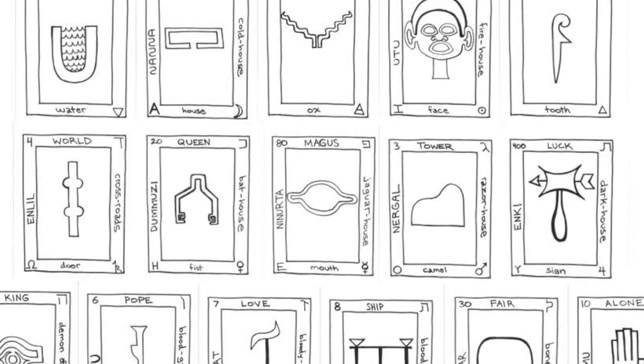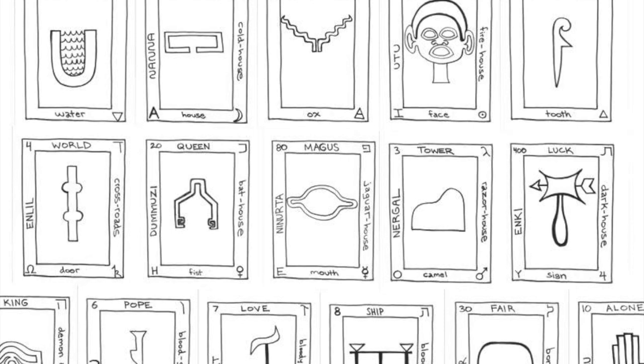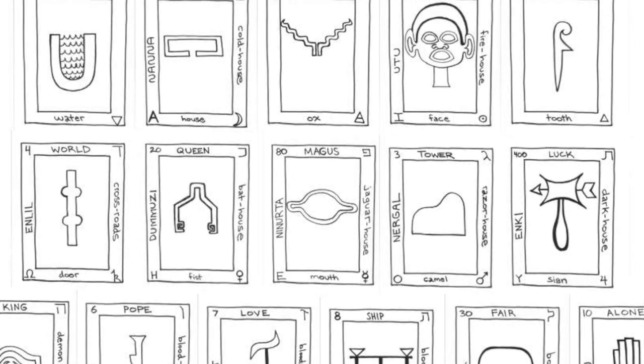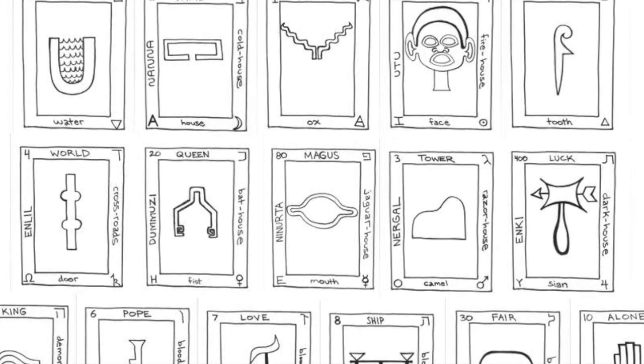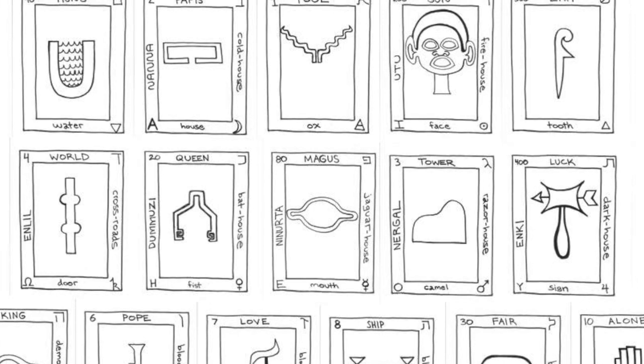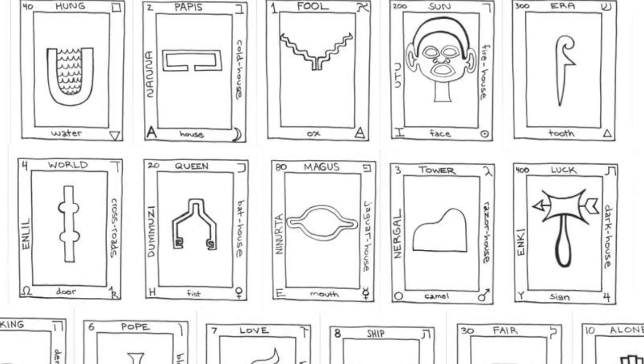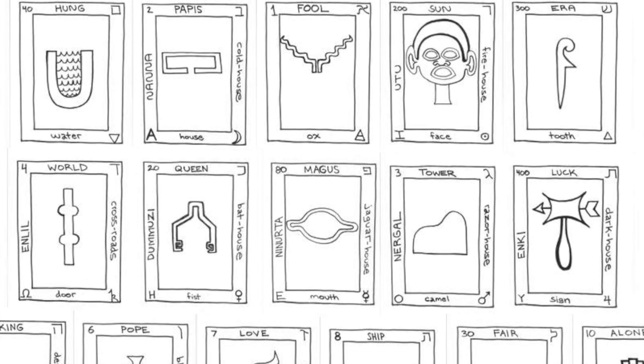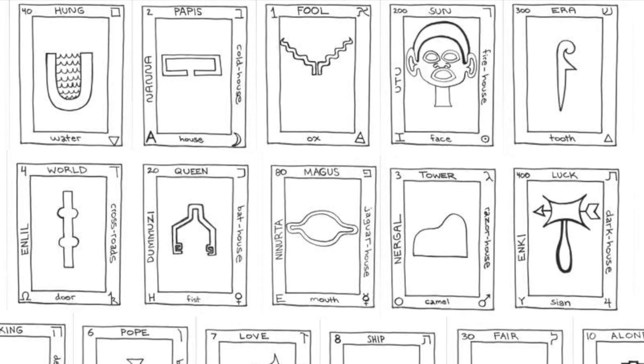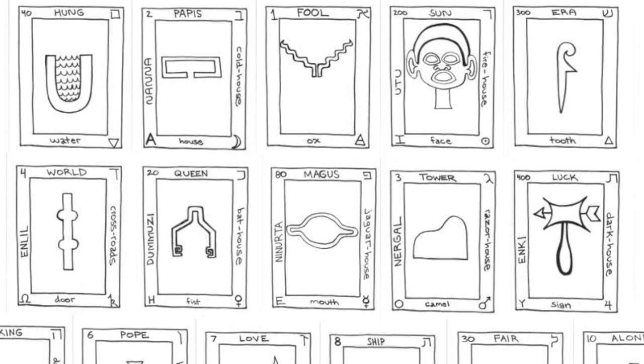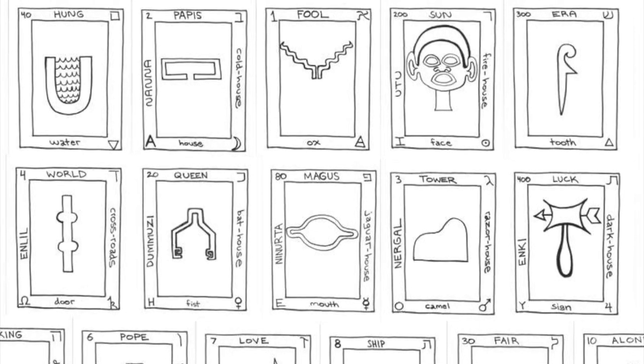It should be noted here that there are three cards without correspondent deities from the Mayan or Sumerian pantheons and these appear on the top row on the left and rightmost ends and in the middle. These cards correspond to the Hebrew mother letters Aleph Mem and Shin.